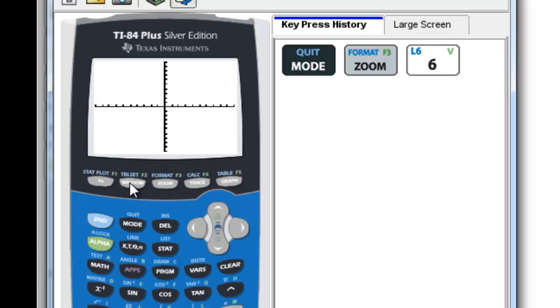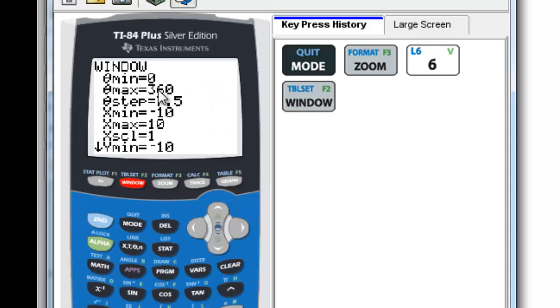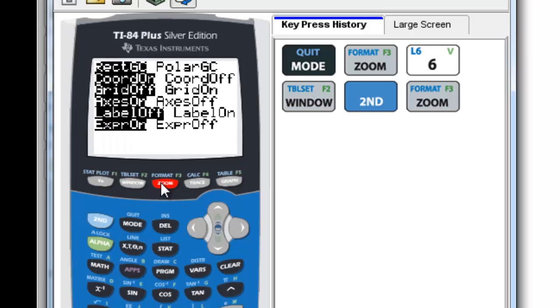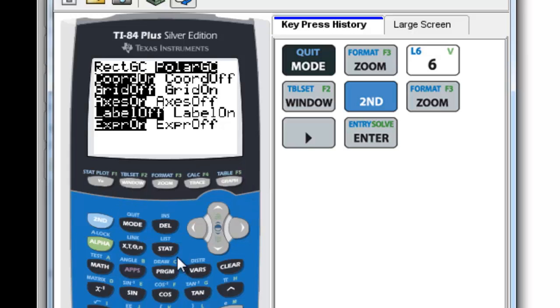But if we go into our window now, we can see that our settings have been changed. We now have a theta min and a theta max going from 0 to 360, so describing the angle. And a theta step of 7.5. And then our x and y values are our standard negative 10 to 10. We're also going to make one more change. We're going to go into the format menu, which is second zoom. And change this top line from rectangular graphical coordinates to polar. So we're going to go over and select that.